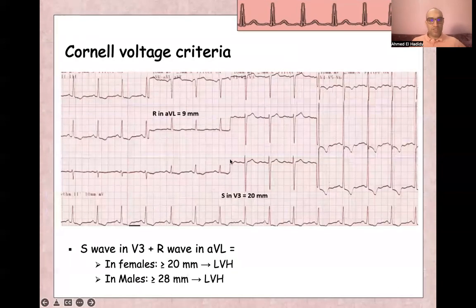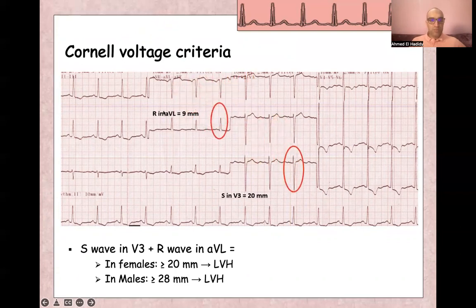There is also the Cornell voltage criteria: S-wave in V3 plus R-wave in aVL should be more than 20 millimeters in females and more than 28 millimeters in males. Counting here, R-wave in aVL is 9 millimeters plus S-wave in V3 is 20 millimeters, which is more than 28 millimeters total.